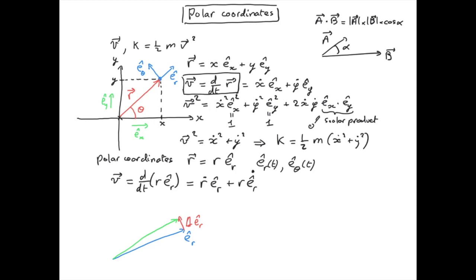The new vector e_r in green is also a unit vector. Therefore, the length of the vector e_r didn't change. What changed is its orientation and it has rotated by a small angle delta theta.